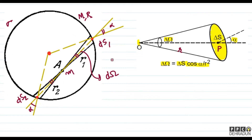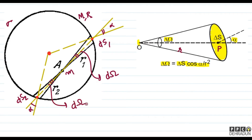The mass per unit area of the shell is σ. If we connect the center to DS1, we get the line perpendicular to DS1. Similarly, connecting the center to DS2 gives the perpendicular to DS2. The solid angle subtended by DS1 at point A is dω, and by the vertically opposite argument, DS2 also subtends dω at point A.